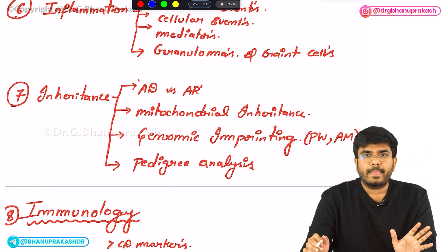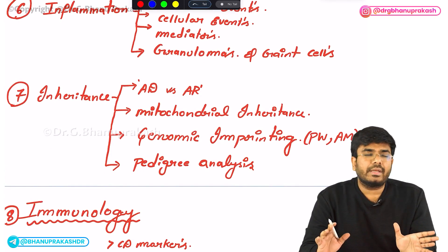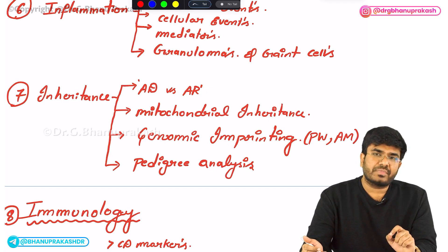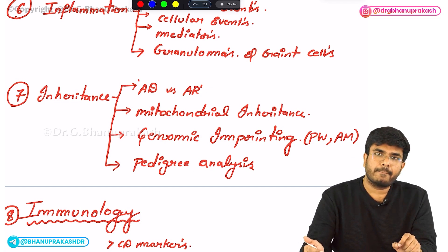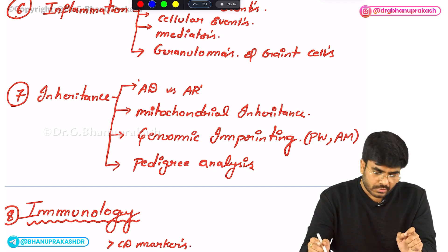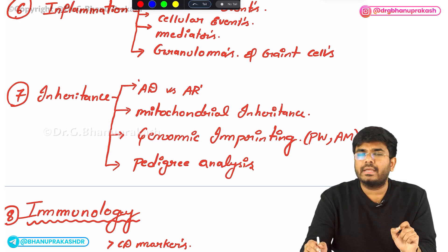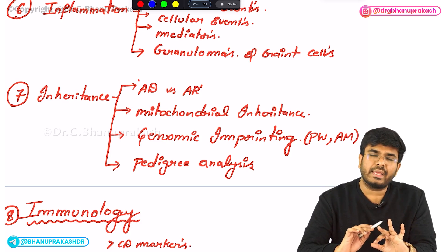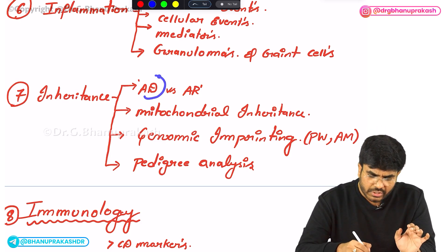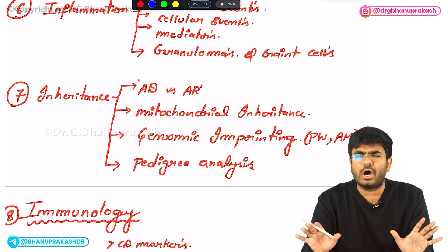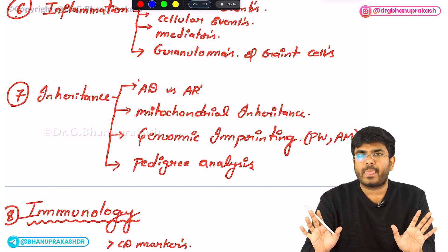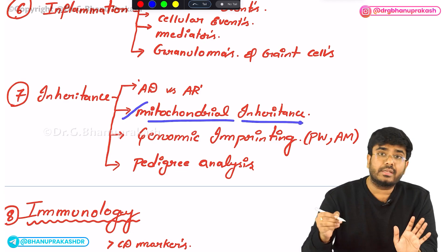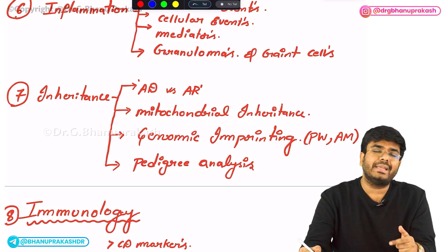In genetics, the most important topic is Mendelian inheritance patterns. In recent FMG and INI-PG exams, they have asked about cystic fibrosis and autosomal recessive inheritance. In every exam you can expect one inheritance pattern question. You have to know all: autosomal dominant versus autosomal recessive disorders, X-linked dominant, X-linked recessive disorders. All Mendelian inheritance patterns are important, and you also have to know about mitochondrial inheritance and which disorders follow the mitochondrial inheritance pattern.